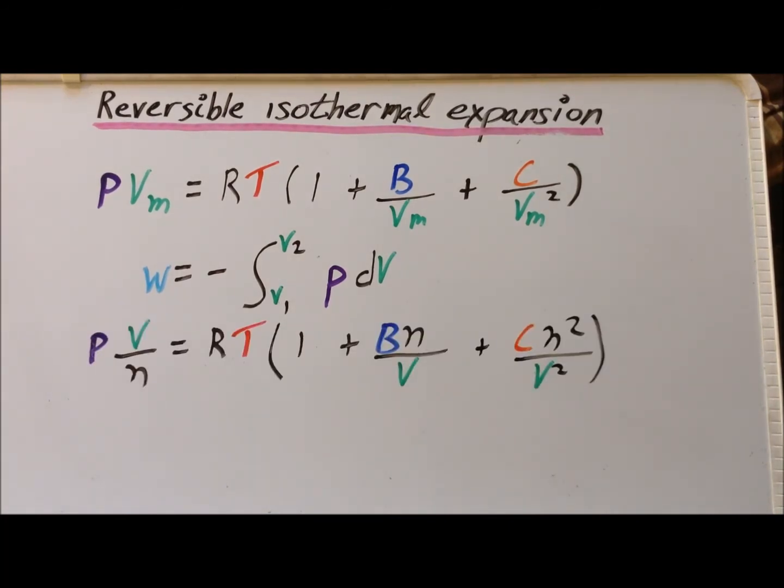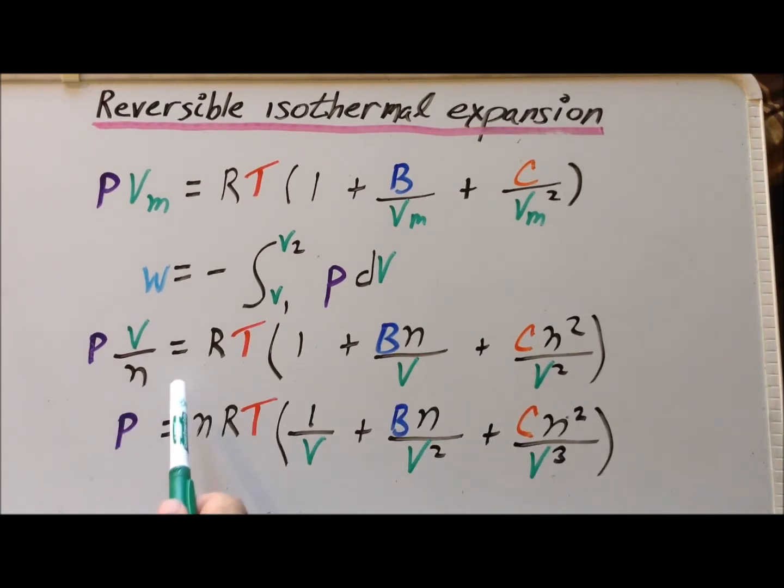First, we will use the fact that the molar volume V sub m is simply V divided by n, where n is the number of moles. If we make that transformation on the left hand side and the right hand side, we get this particular expression. We can multiply each side by n divided by V, and we get that the pressure is equal to nRT times this quantity inside the parentheses.